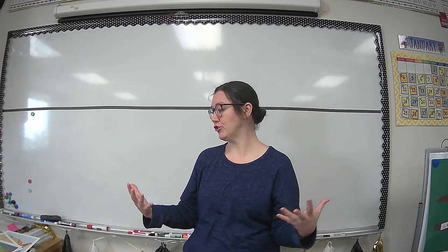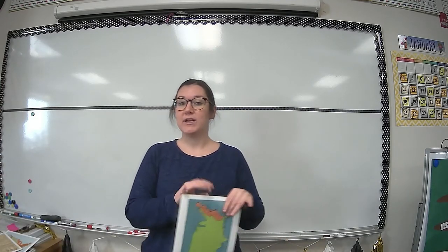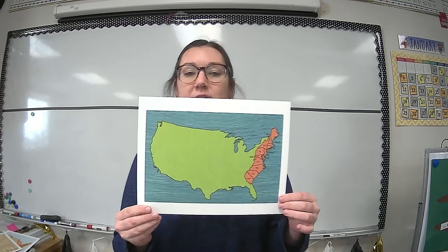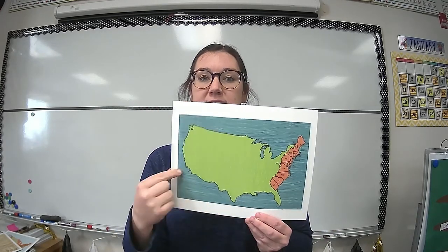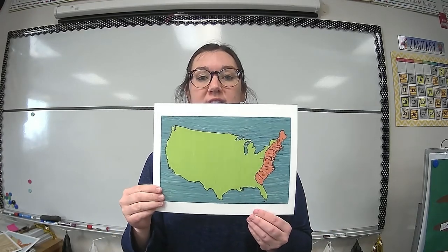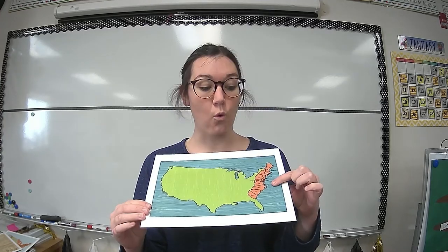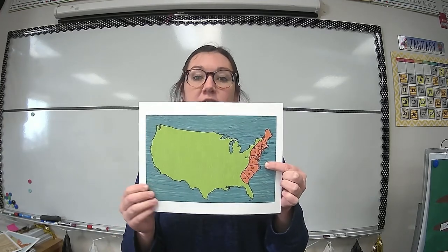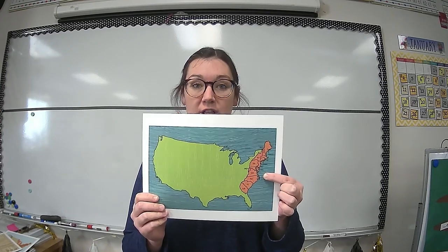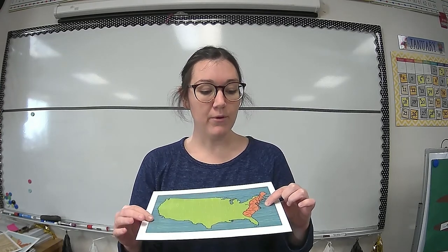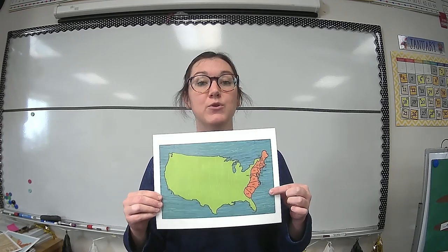Now remember, when the United States first started, it wasn't as big as it is today. When the United States first started, it was just these 13 orange states — those are the 13 original colonies.